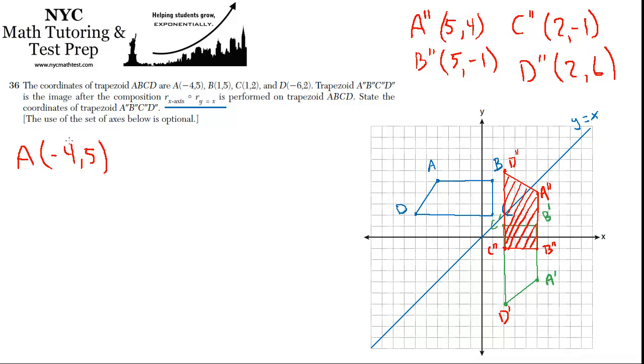That's where it is here. Basically, you transpose the x and y coordinate. So A prime, you just switch them. This becomes 5, negative 4.